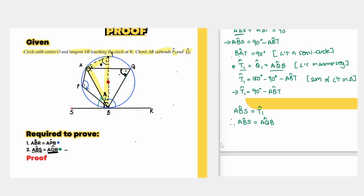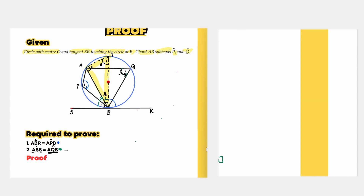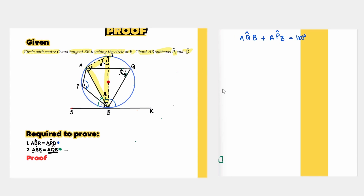Now let's prove the blue one — angle APB equals angle ABR. We know that angle AQB plus angle APB equals 180 degrees. The reason is opposite angles of a cyclic quadrilateral.